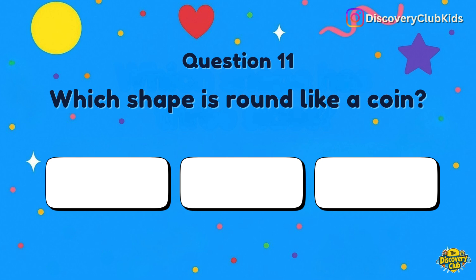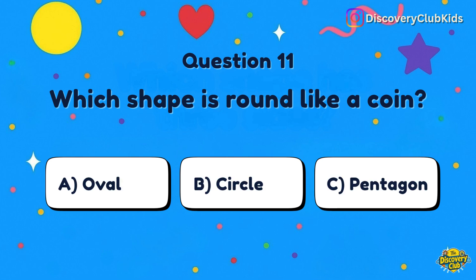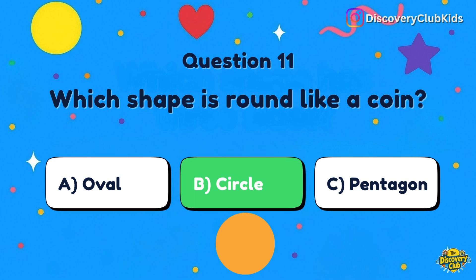Question number 11: Which shape is round like a coin? Your options are oval, circle, or pentagon. The correct answer is circle.